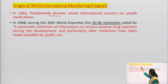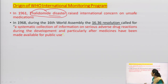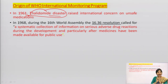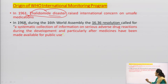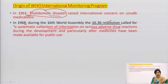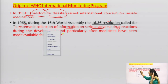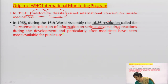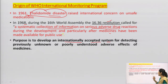In 1961, the thalidomide disaster raised international concern on unsafe medicines, as we have seen in the previous lecture. After this thalidomide disaster, the WHO International Monitoring Program began. In 1968, during the 16th World Health Assembly, resolution 16.36 called for systematic collection of information on serious adverse drug reactions during the development and particularly after medicines have been made available for public use. The purpose was to develop an internationally accepted system for detecting previously unknown or poorly understood adverse effects of medicines.